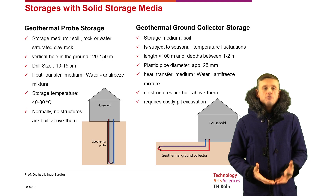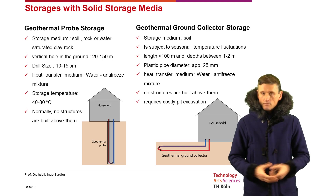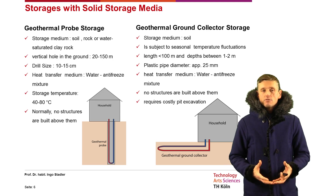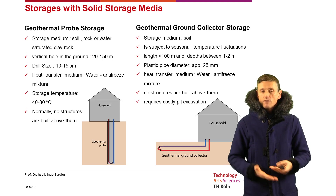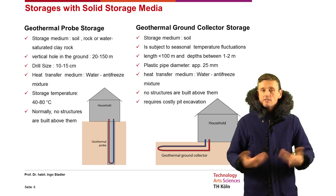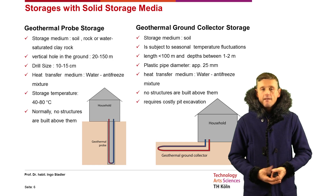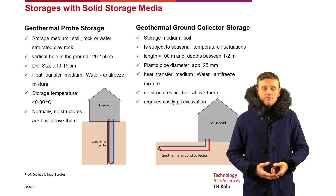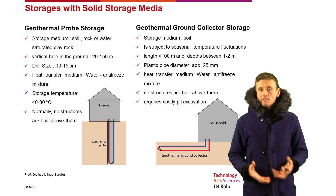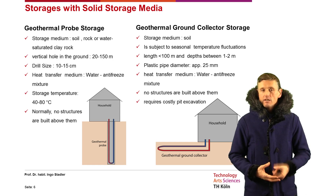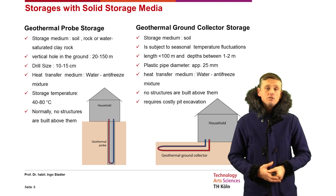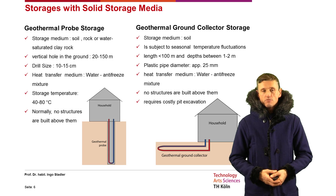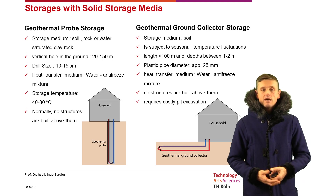On the right side, we have the geothermal ground collector storage. The storage medium here is soil, and it is subject to seasonal temperature fluctuations because it is close to the surface. The collector length is typically less than 100 meters, at a depth of 1 to 2 meters. Plastic pipes of approximately 25 millimeters diameter are used, with water and anti-freeze mixture as the heat transfer medium. No structures are built above them, and a disadvantage is the costly pit excavation required.